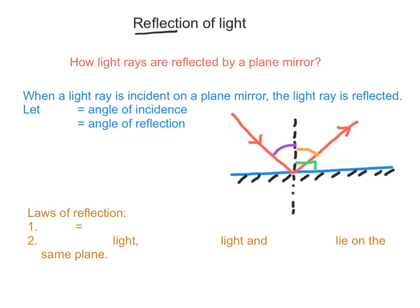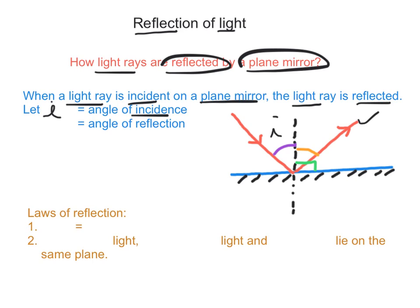Reflection of light. How light rays are reflected by a plane mirror. When a light ray is incident on a plane mirror, the light ray is reflected. Let I be the angle of incident and R will be the angle of reflection. By the law of reflection, we know that angle of incident I equals angle of reflection R.